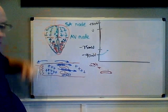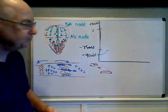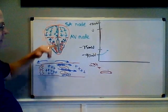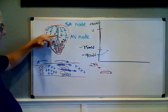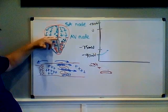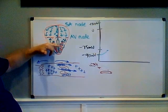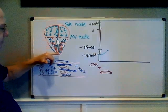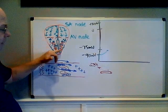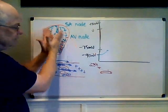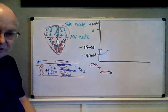It also spreads through the internodal pathway. By the time the atria are done contracting, the action potential has hit the AV node, traveled through the bundle of His, the two bundle branches in the interventricular septum, hits the Purkinje fibers, and then the ventricles begin contracting.